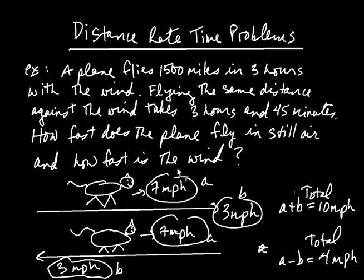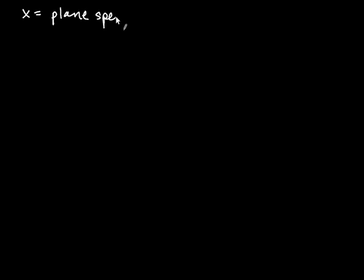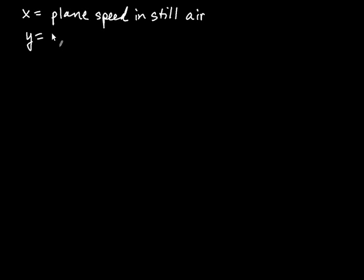With this in mind, we're going to tackle our problem. We've got 1,500 miles in three hours with the wind, and flying the same distance against the wind takes three hours and 45 minutes. Let's identify what we're looking for — two things. Let x equal the plane speed in still air — this is like the cat walking when not on a moving sidewalk. The wind is like the moving sidewalk. And let y equal the speed of the wind.